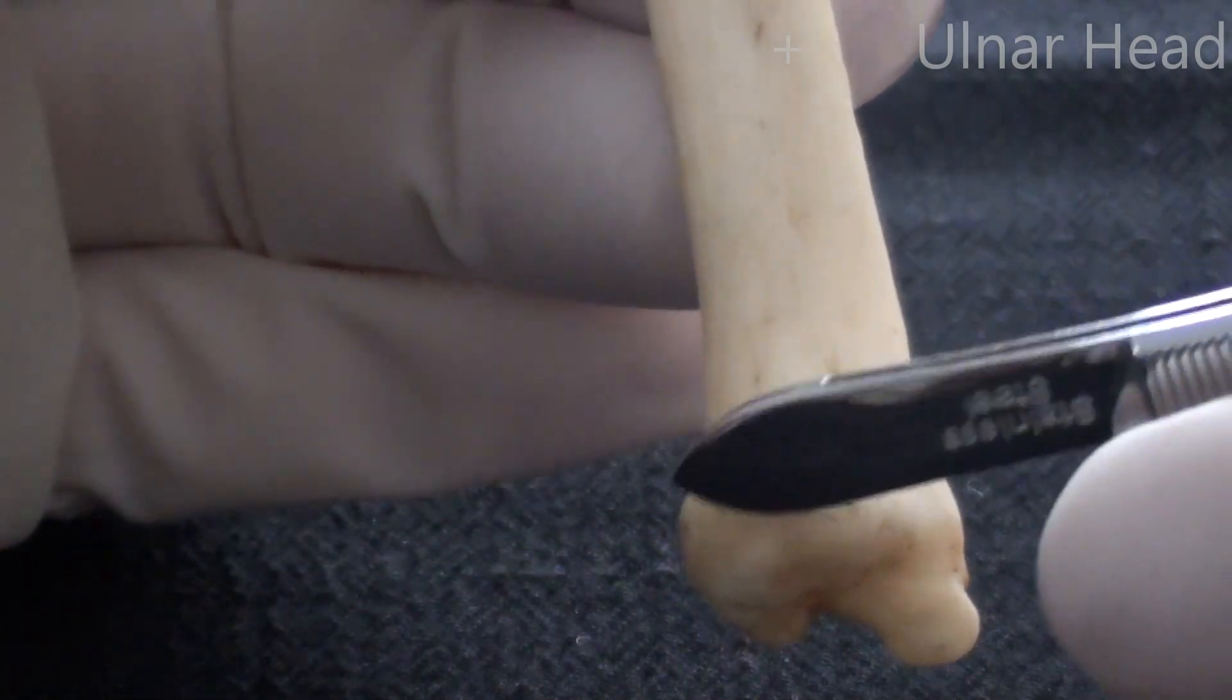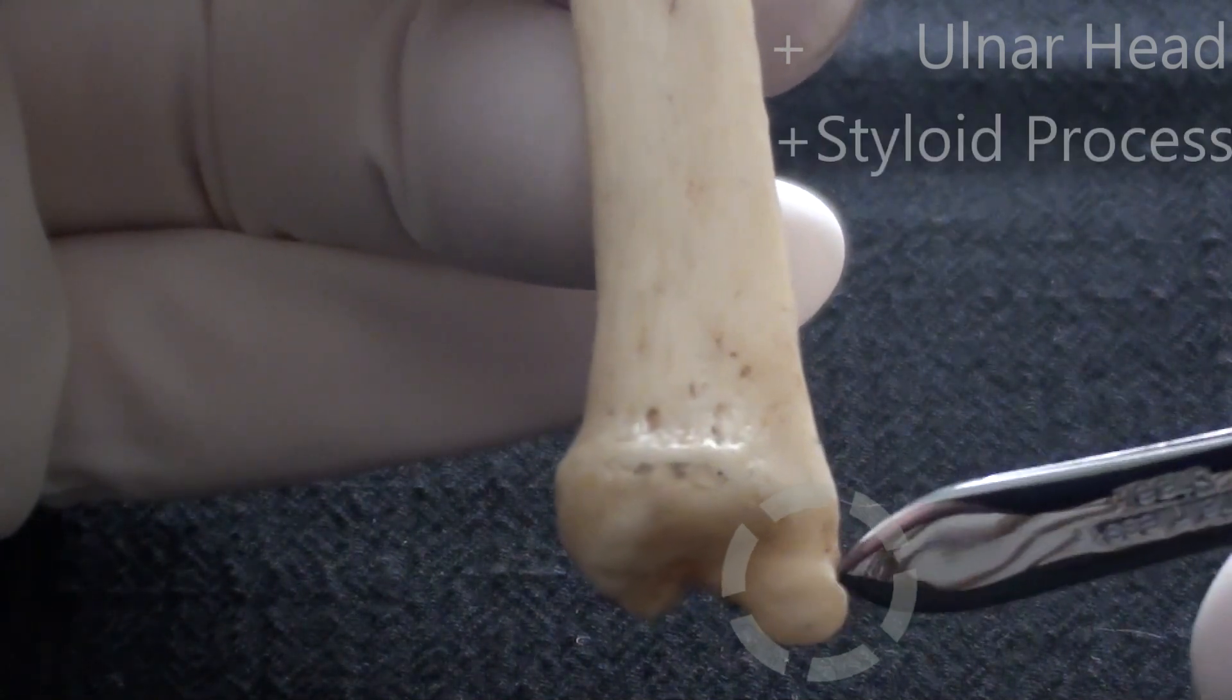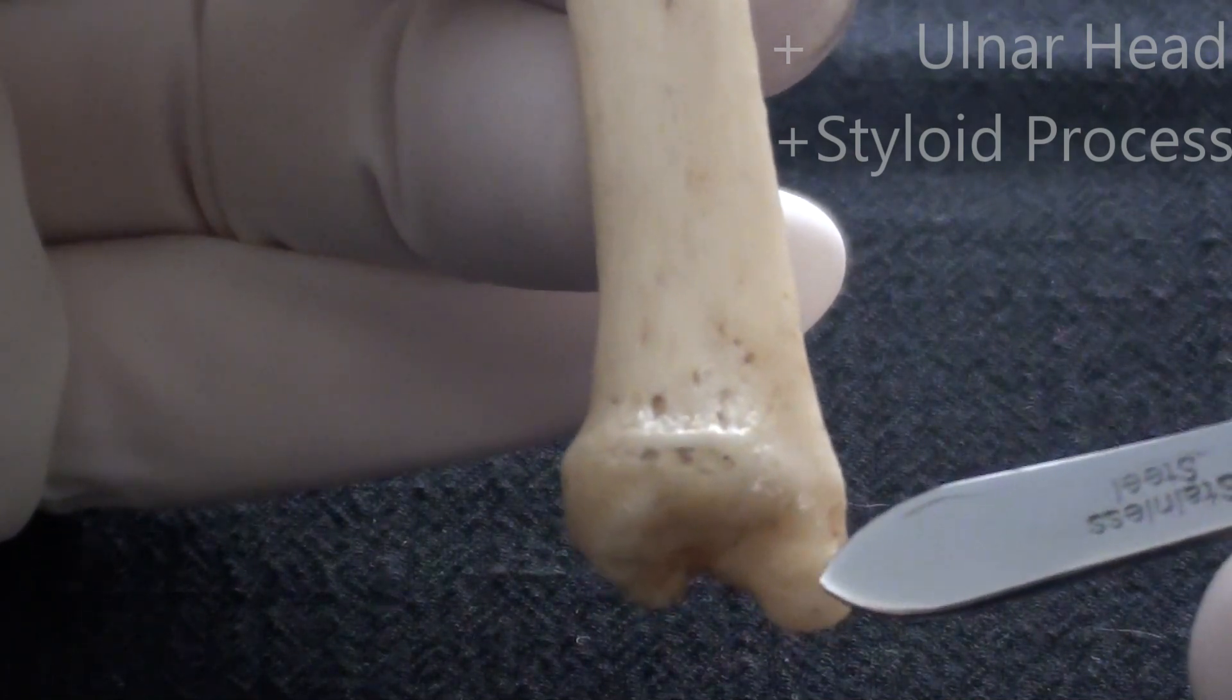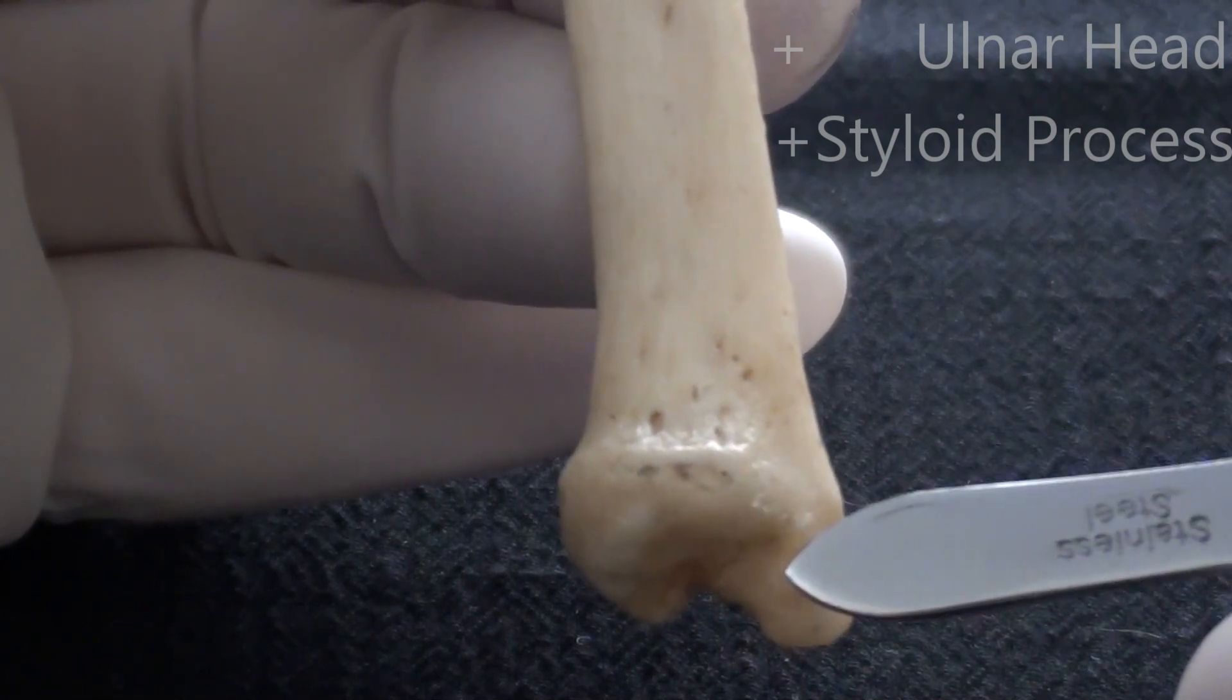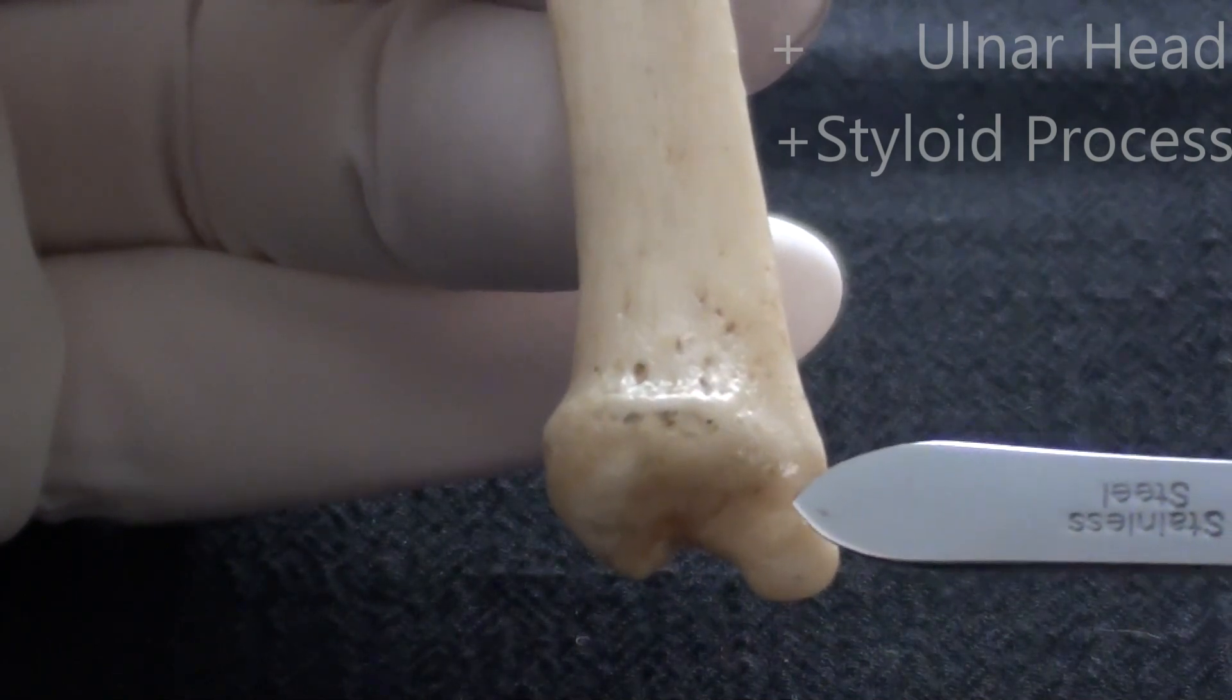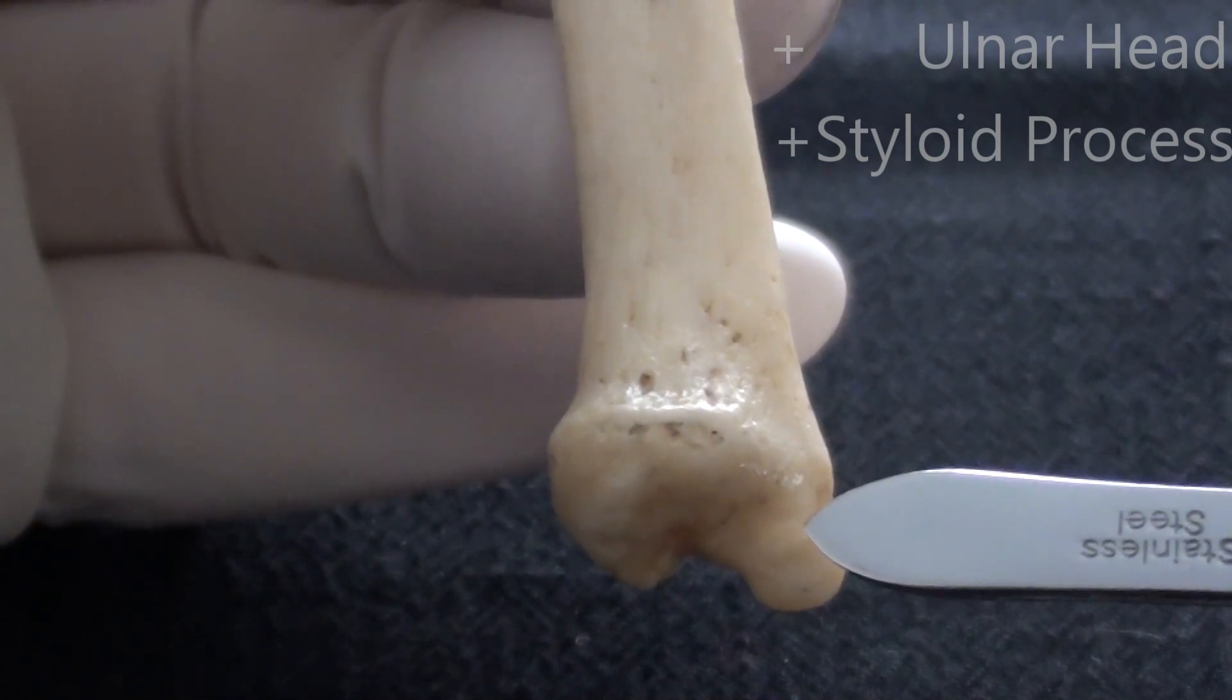Inferiorly on the ulnar head, we are going to see a small inferiorly oriented projection which is known as the styloid process. The styloid process will serve as the attachment point for multiple ligaments that will run between the distal ulna, namely the styloid process, and several bones of the hand skeleton, particularly the pisiform, the hamate, and to the base of the fifth metacarpal bone.